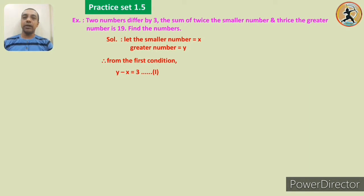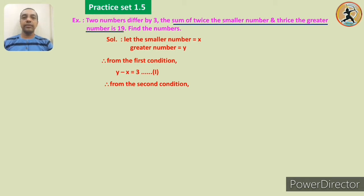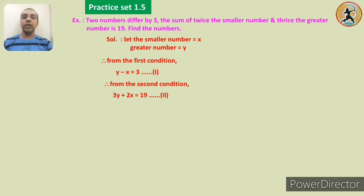That is, greater number minus smaller number is equal to 3. Now the second condition: the sum of twice the smaller number and thrice the greater number is 19. Twice of x is 2x, and thrice the greater number y gives 3y. So the second equation is 3y plus 2x is equal to 19.